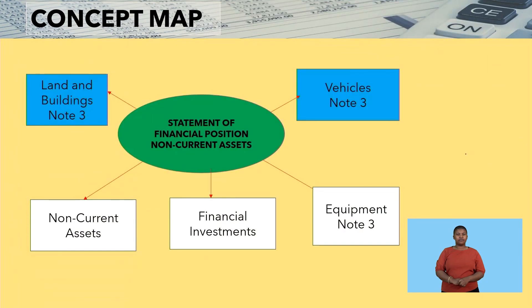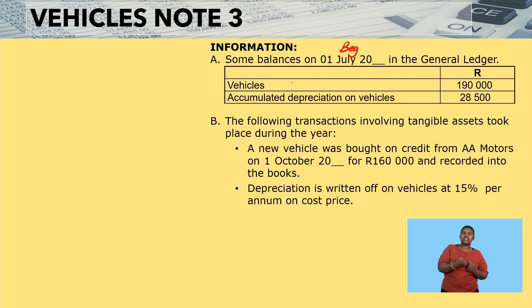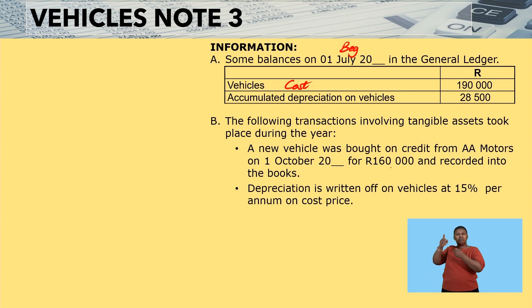Now let's look at how we record vehicles. Some balances are given on the 1st of July — this is your beginning. We have vehicles at cost and accumulated depreciation on vehicles. A new vehicle was bought on credit from AA Motors on the 1st of October for $160,000 and recorded in the books. Depreciation is written off on vehicles at 15% per annum on the cost price method. You have to know your depreciation methods — what to do with the cost price method versus the diminishing balance method.